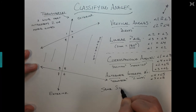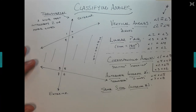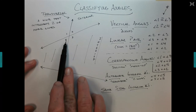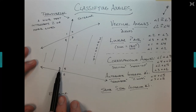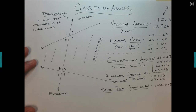Next are same side interior angles. Instead of being on alternate sides of the transversal, these angles are on the same side of the transversal, and still need to be on the interior. So angle four and angle eight are a same side interior pair, and the other pair is angle three and angle five.